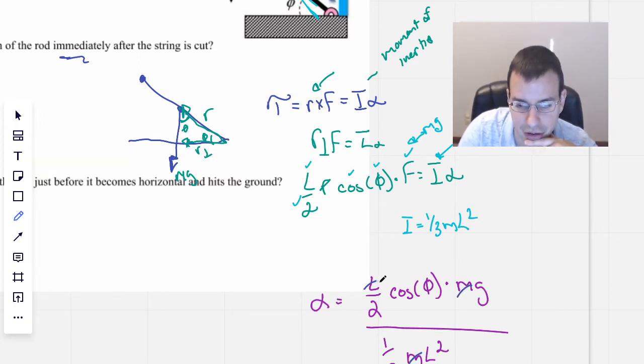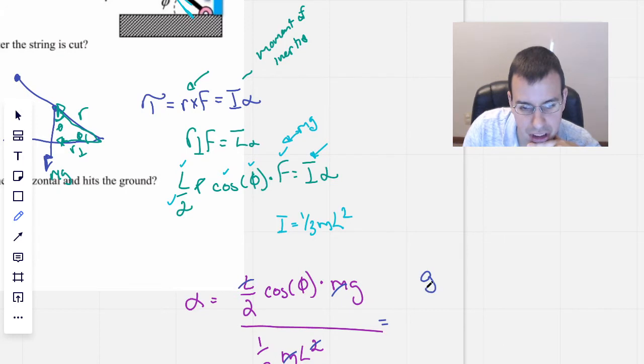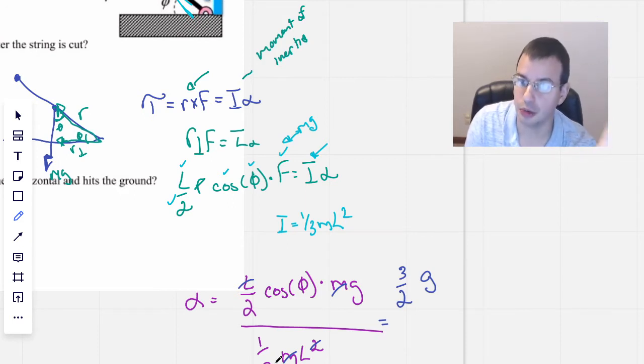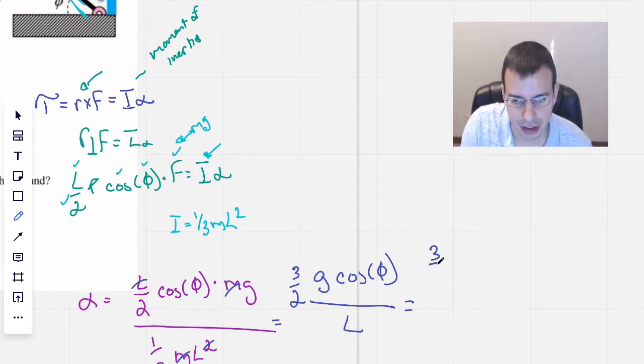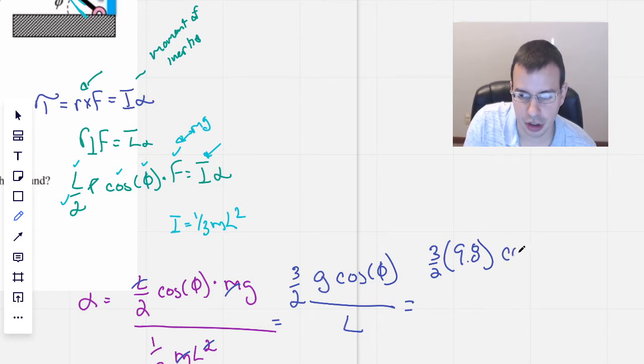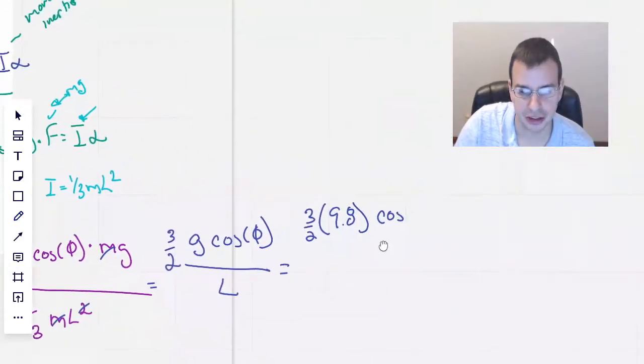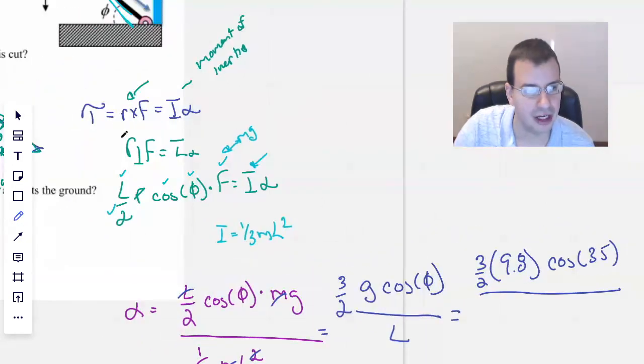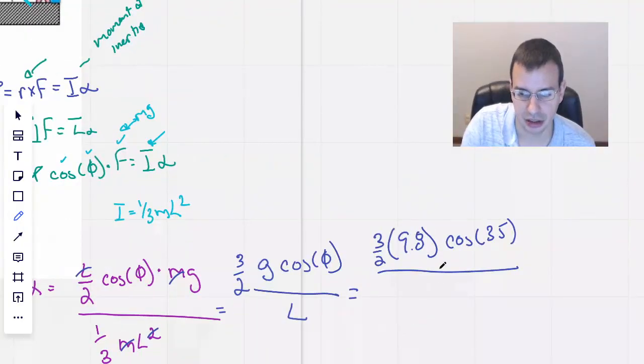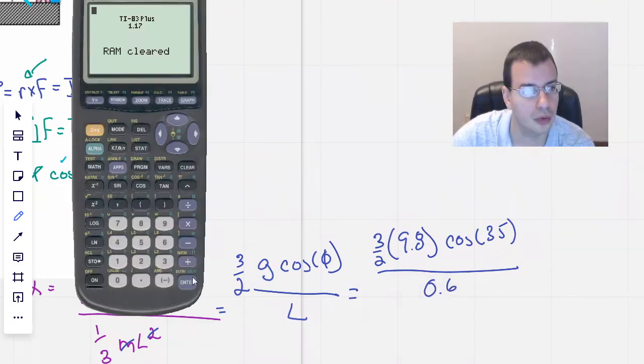And it makes sense that the masses kind of cancel. One of the L's will cancel, and we're left with G. So I have three halves, because when we're dividing by a fraction, we'll multiply by the reciprocal. So we have cosine of phi over L. Putting some numbers in there. We have three halves, 9.8 cosine of I think it was 35. That's good. And then the L is 0.6.